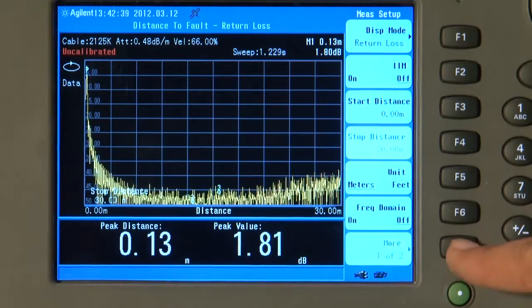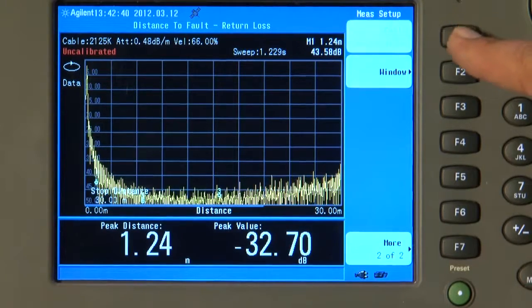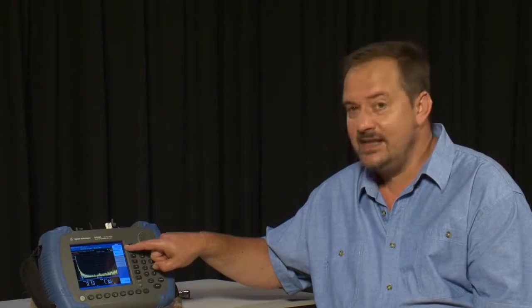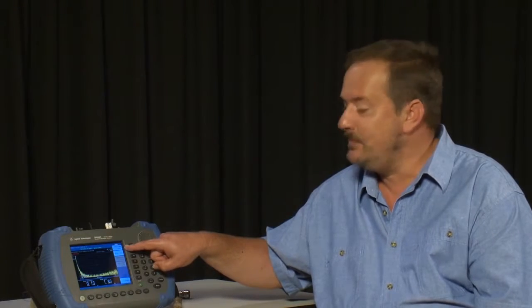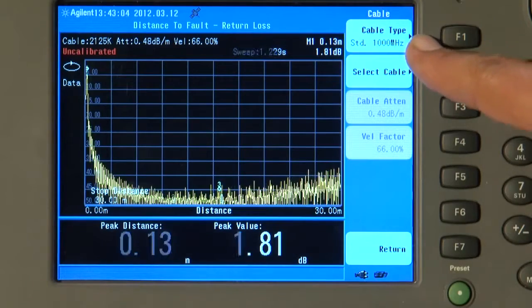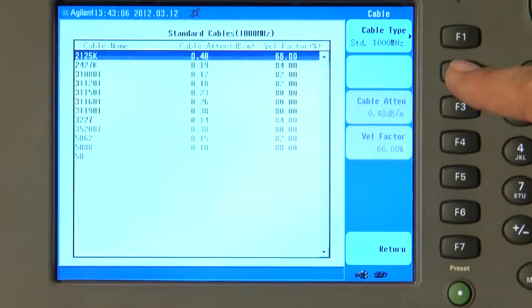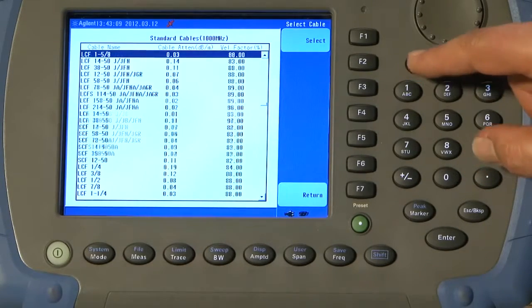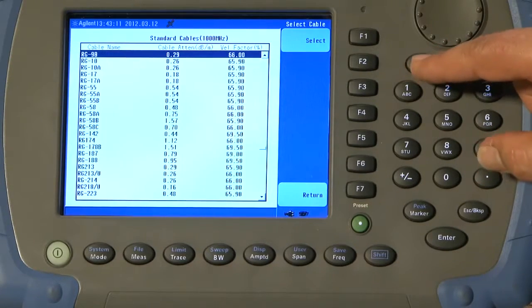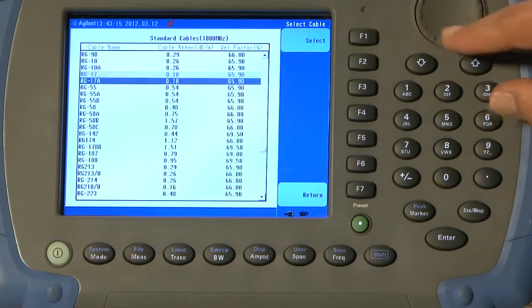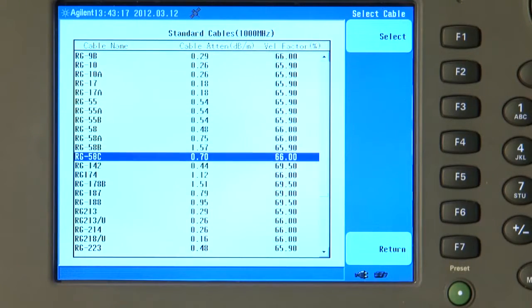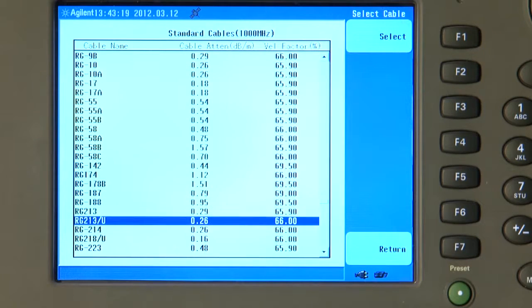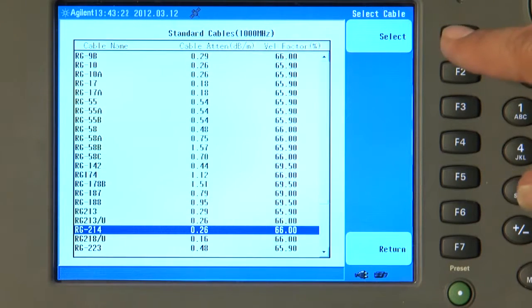So we press the More button, press Cable Specification. We can select the frequency at which the cable specifications were measured, in this case 1 GHz. And if I press Select Cable, we can scroll down through a very long list of all the most common commercially available RF cables. In this case, I am going to select RG214 and press Select.